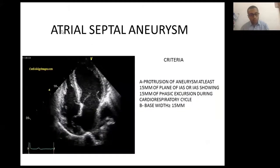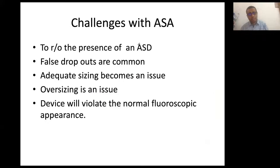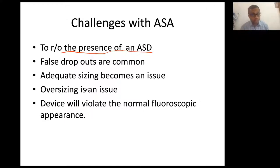This four-chamber view shows a very large aneurysmal bulge of the atrial septum. The aneurysmal septum is challenging because it is difficult to determine whether an ASD is truly present — false dropouts are very common because the septal tissue is not in one plane but in a C-shaped or L-shaped configuration. Adequate sizing becomes an issue and oversizing becomes a concern, especially when using a self-centering device. The device will also violate the normal fluoroscopic appearance, which can fool the operator.